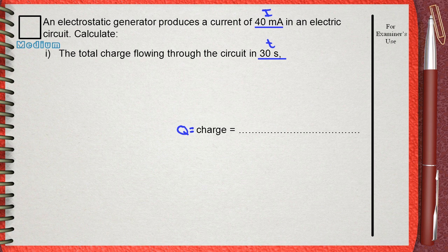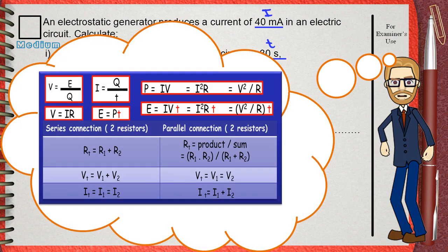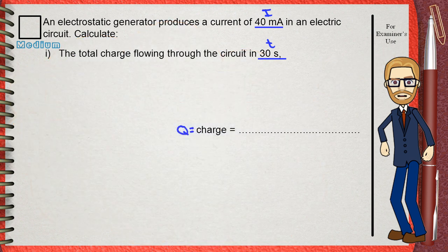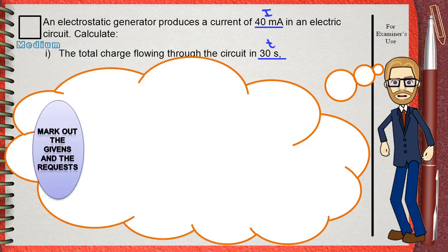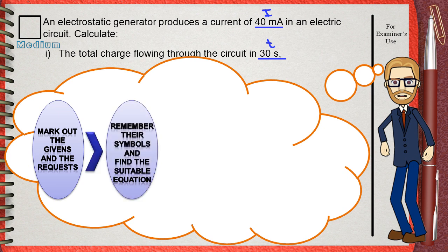To answer these questions, you must memorize the 16 equations that are related to electric current and electric circuits. To answer these problems, first mark out the givens and the requests in the question. After that, remember their symbols and find the suitable equation among the 16 rules that you have memorized before.